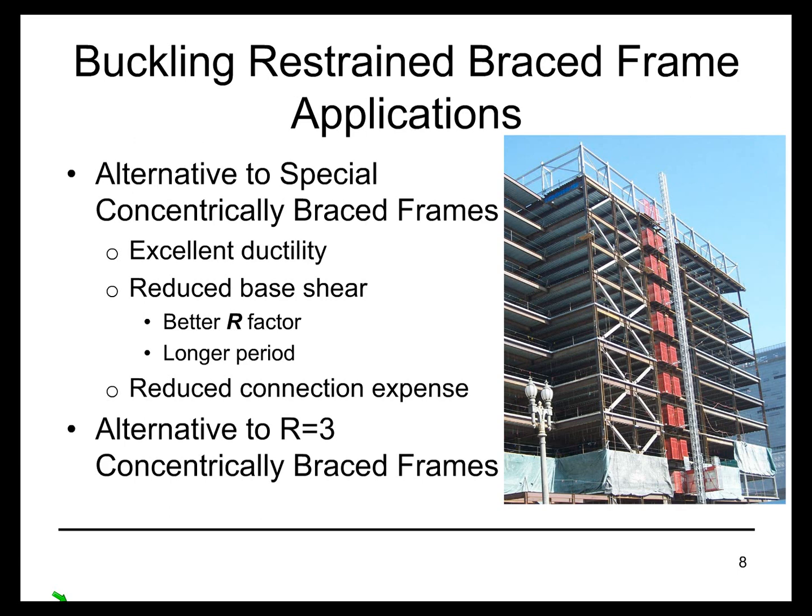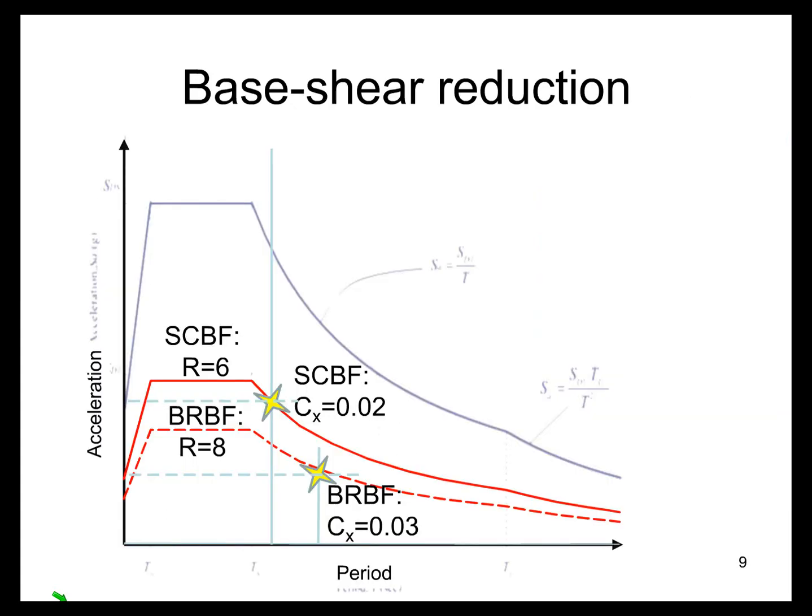It's also worth considering in, say, Seismic Design Category C as an alternative to the R equals 3 concentrically braced frame system. Even though there are no detailing requirements for R equals 3, which is permitted in Seismic Design Categories B and C, it can be economical to use a buckling restrained braced frame as an alternative.